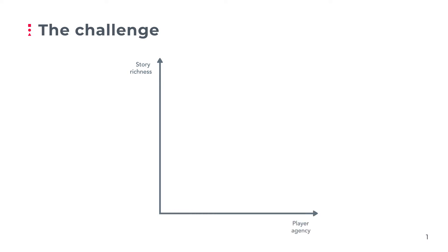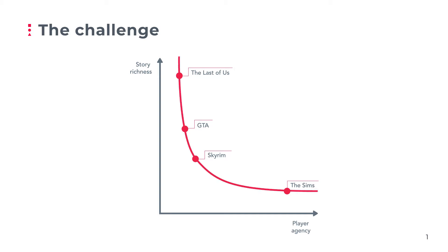In video games, developers strive to offer the player a rich and engaging story, while providing the player with as much agency over said story as possible. However, when we consider existing video games, we discover that these two goals are often at odds. Games with very rich stories, such as The Last of Us, have little player agency, while in games such as The Sims, where the player has a lot of control over the unfolding events, the stories tend to be rather shallow. The reason is simple: the workload of content creation grows both with the story richness and the player agency, and that's why many games lie on a curve that trades off one for the other.